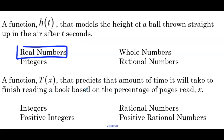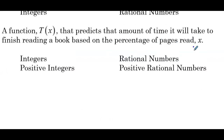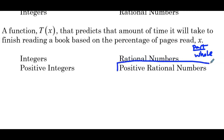A function t of x that predicts the amount of time it will take to finish reading a book based on the percentage of pages read x. Our input is the percentage of pages. Percentage is part over whole — if I can write it as part over whole, I can write it as a ratio, which means it's a rational number. And since we're reading a book, we're not going to have a negative percentage. So positive rational numbers is the most appropriate domain.